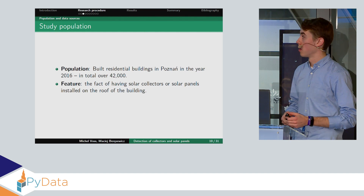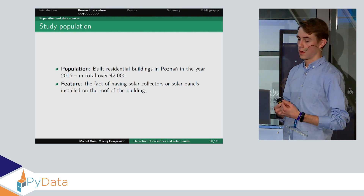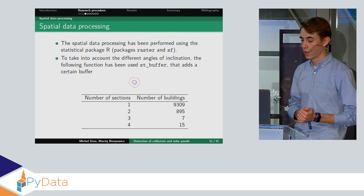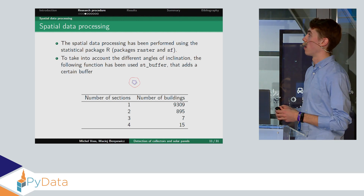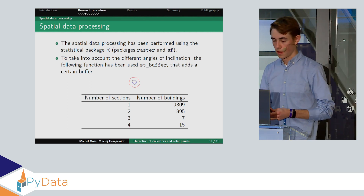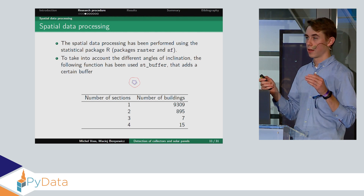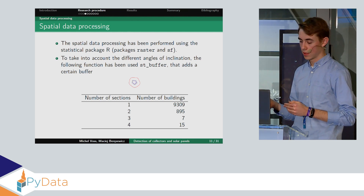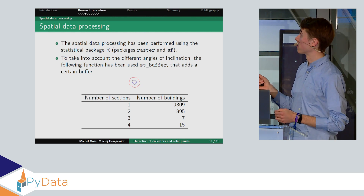When it comes to the population, I analyzed just Poznan — 42,000 buildings — and I was searching for roofs with solar panels. The building layer was not perfectly fitted to the images, so we had to use a buffer of half a meter. At the end, we used just the buildings from one section because we got around 3,000 images. Sometimes a building was in two separate files, which we didn't include because it would be hard to combine. So at the end we took 9,300 buildings.